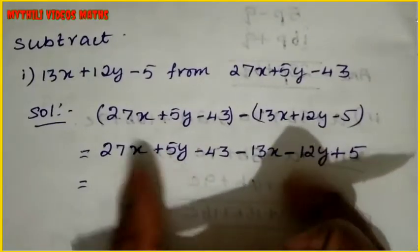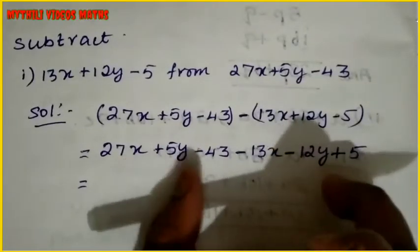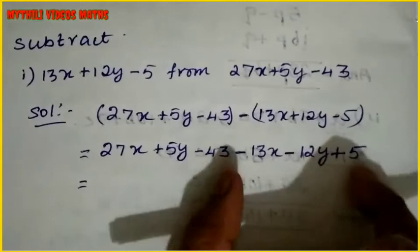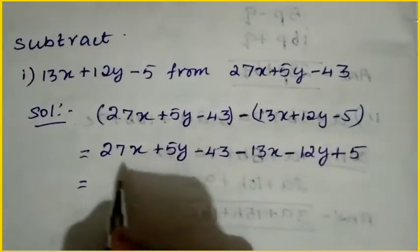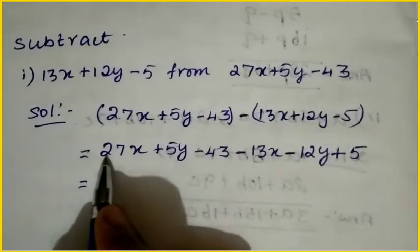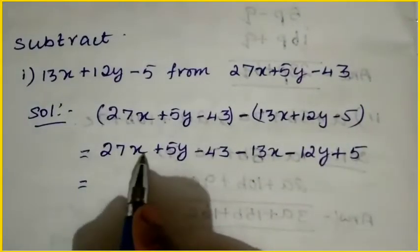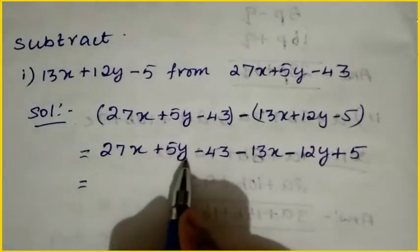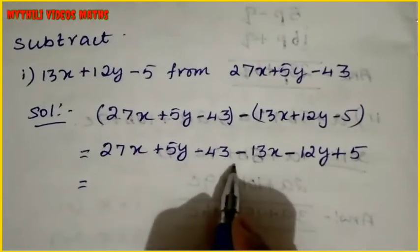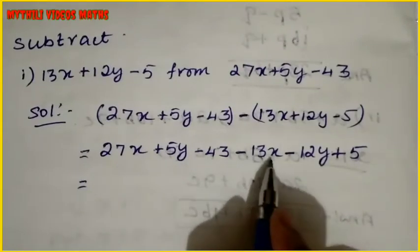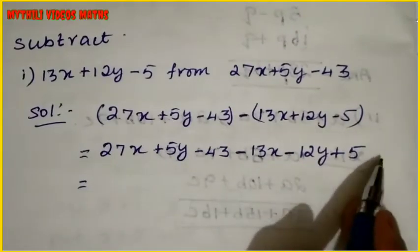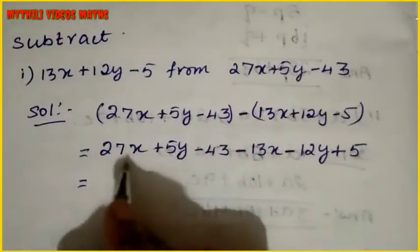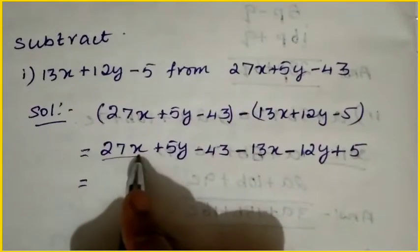If we change the signs: x term, y term, constant term. Here we have 27x plus 5y minus 43. Minus 13x minus 12y plus 5. That is the way we have to add.